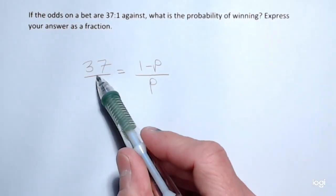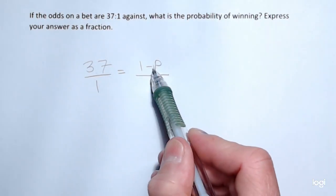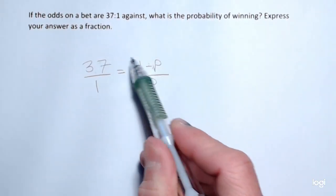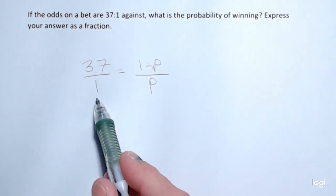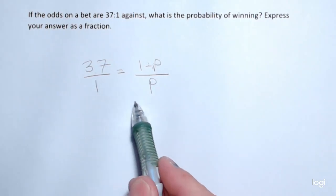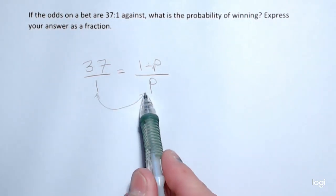So against goes with 1 minus p, goes with 37. You want to make sure they're in the same position on either side of the equation. And then the 1 goes with the p, like so.